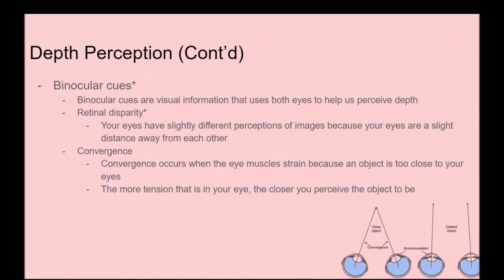Binocular cues are visual information that uses both eyes to help us perceive depth. One binocular cue is retinal disparity — your eyes have slightly different perceptions of images because they are a slight distance apart. Another is convergence — when eye muscles strain because an object is too close to your eyes; the more tension in your eyes, the closer you perceive the object to be. You can experience this by holding your finger right up next to your eyes and feeling your eyes strain to focus.